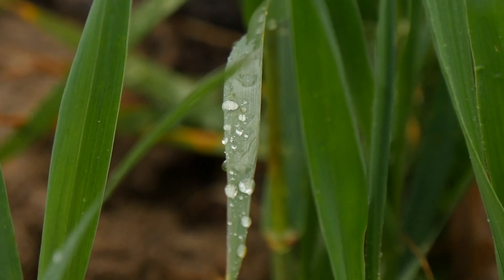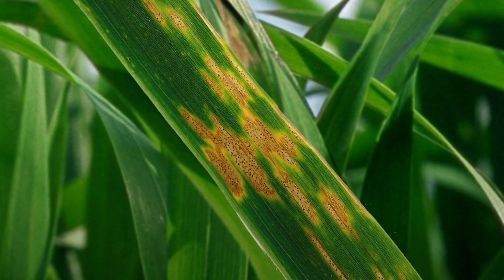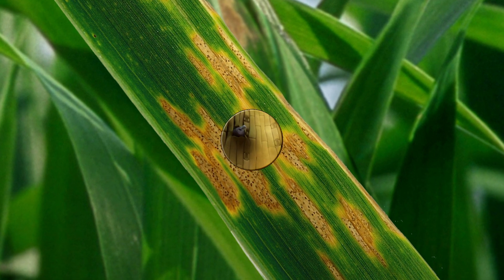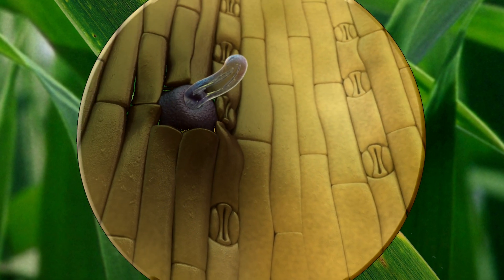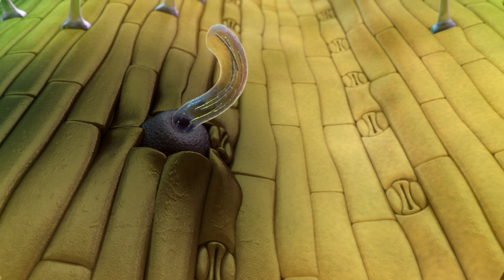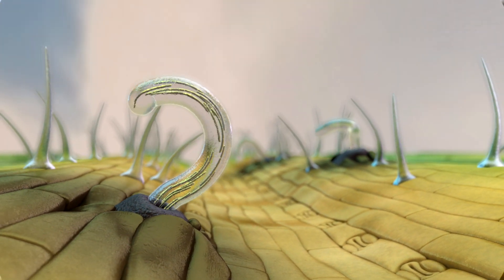Here you see an infected wheat leaf with its typical yellowish brown regions. For its attack on other parts of the plant, Septoria forms these slimy-looking tubes. They are full of spores, ready for infection of new leaves.